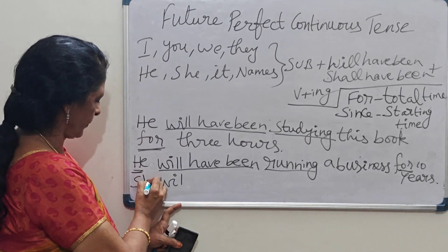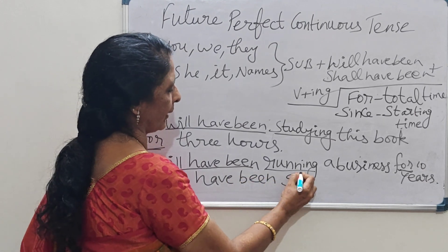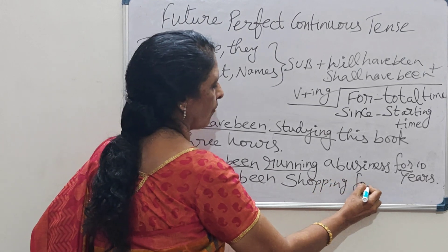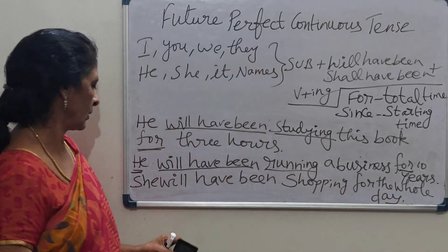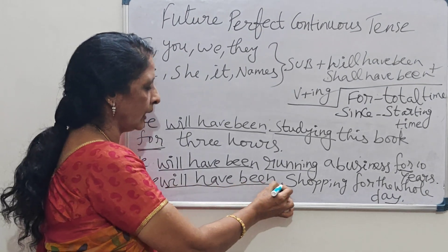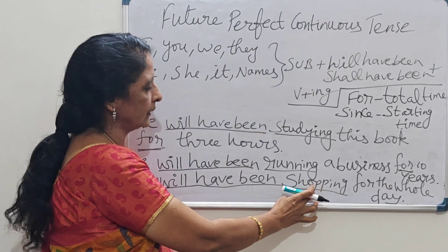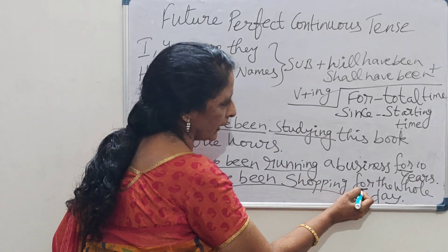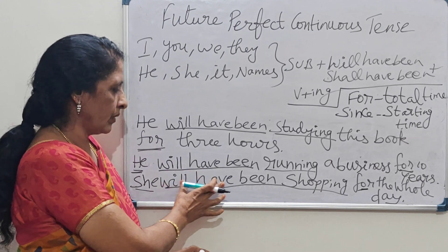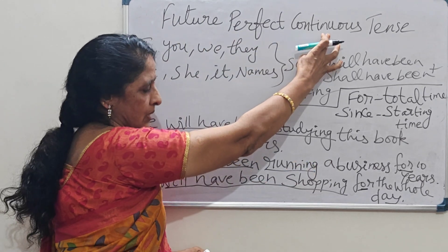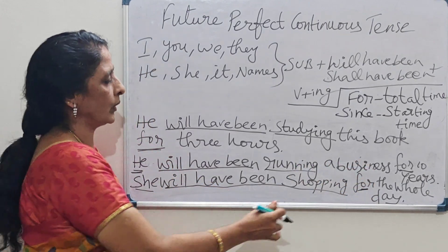Fifth example: 'She will have been shopping for the whole day.' Subject is 'she,' then 'will have been,' then 'shopping' — verb plus ing — and 'for the whole day.' We use 'for' here because the whole day is total time.